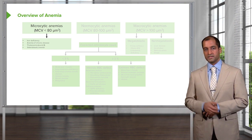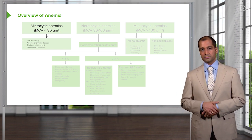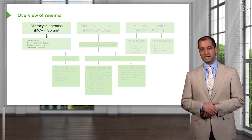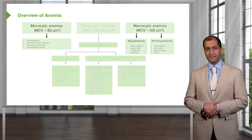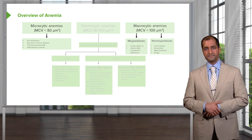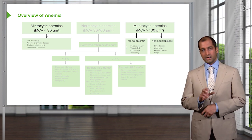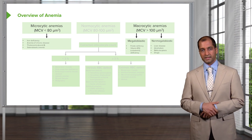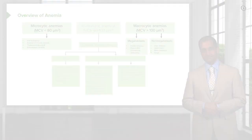Globin refers to the genes — alpha, beta, gamma, delta, and such — which you don't have control over; that's something you're given. Under macrocytic anemia, we'll divide this into megaloblastic and non-megaloblastic, and that distinction becomes really important for us.